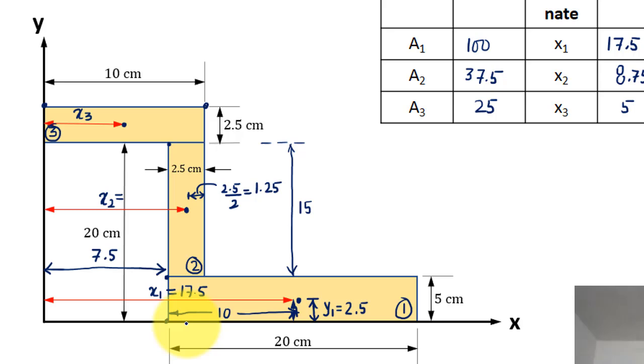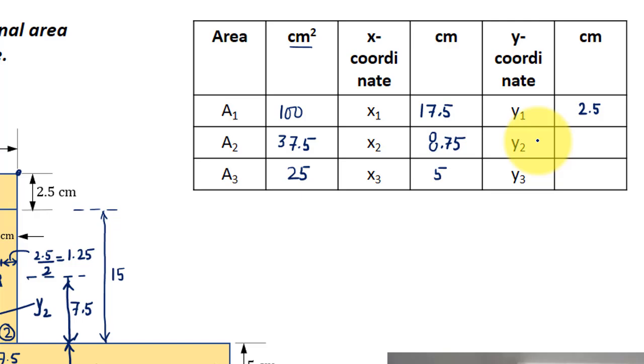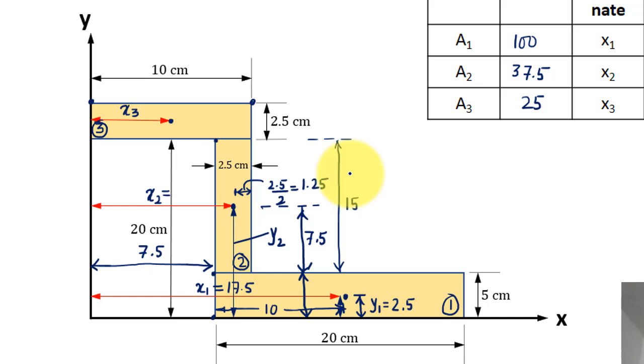Now, this is the centroid, and with respect to this x, that's y2. This is 15, so half of 15 is obviously 7.5, and 7.5 plus this much distance, that's plus 5. 7.5 plus 5 is 12.5, so y2 works out as 12.5.